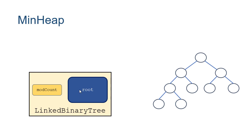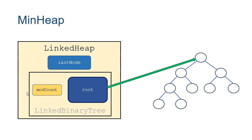In our min heap, the LinkedBinaryTree has a reference to the root, and the LinkedHeap adds a last node reference pointing to the last node in the bottom level of the heap. When we add one more, we'll add a left child to this node, and that becomes the new last node. If we remove the min, even though the min is at the root, we have to remove the last node to maintain a complete tree. That element then gets placed back into the tree with heap ordering maintained — and we'll see all of that when we look at how to add and remove elements in future videos.